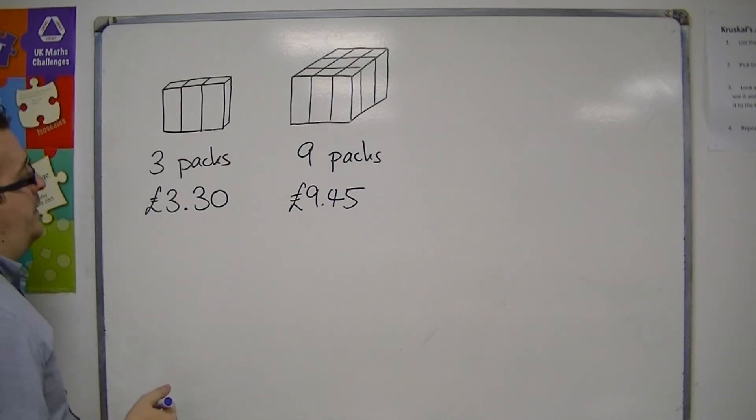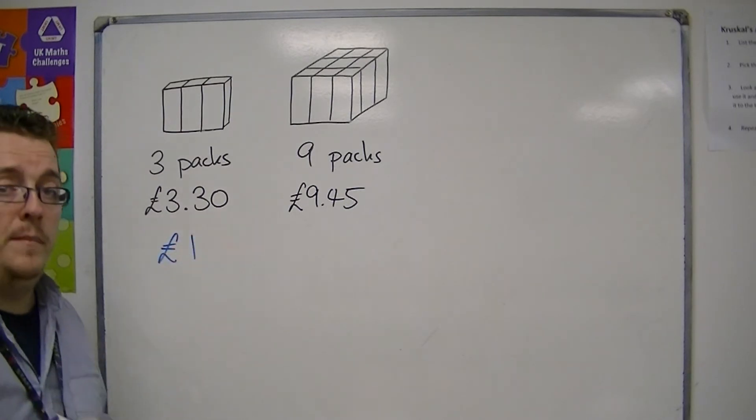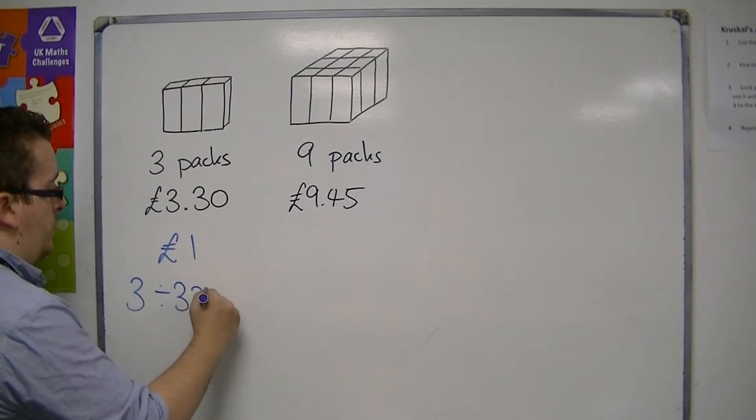I look instead at how much £1 could get me. And so in order to do that, I take the number of packs and divide by my price, the £3.30.